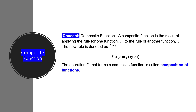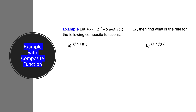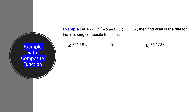Let's take an example. Let's say f of x is equal to 2x squared plus 5, and g of x is equal to minus 3x. Then find the rule for the following composite functions: A) f∘g of x, and B) g∘f of x.